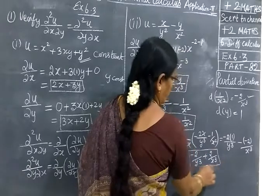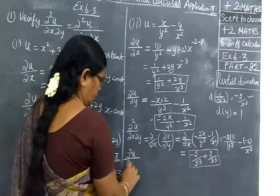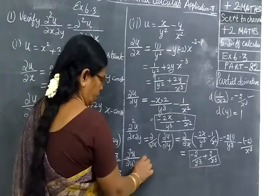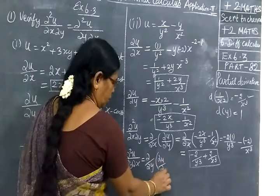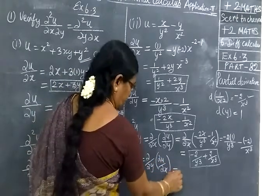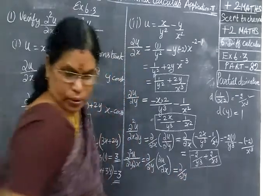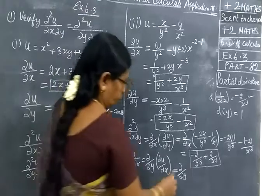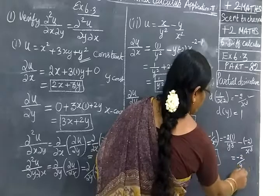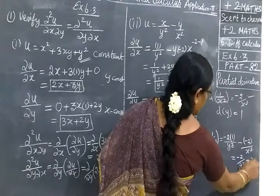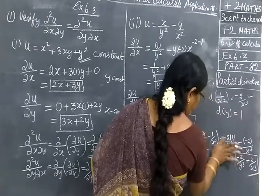Then ∂²u/∂y∂x equals ∂/∂y of (∂u/∂x). We write out the expression and check the answer: the result is minus 2 by y² plus 2 by x cube.